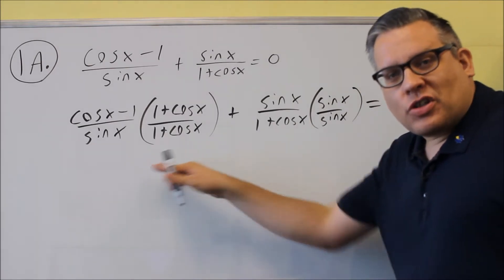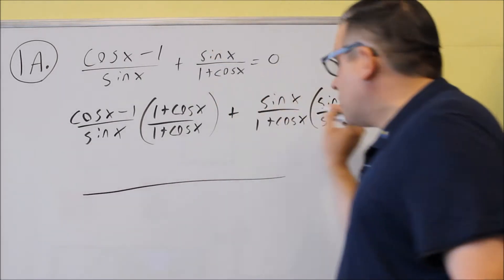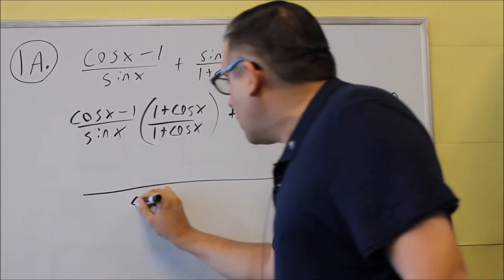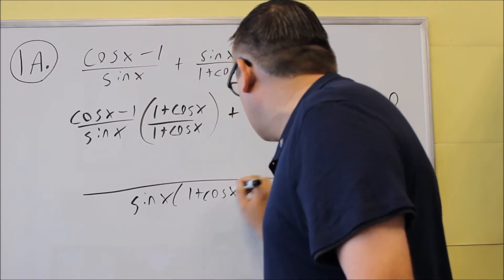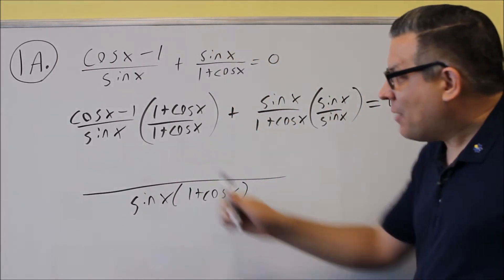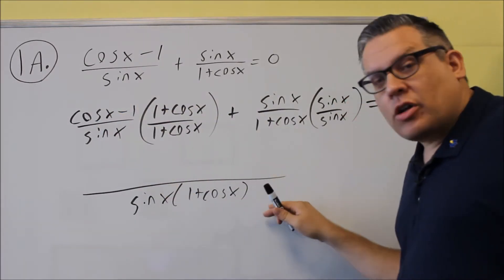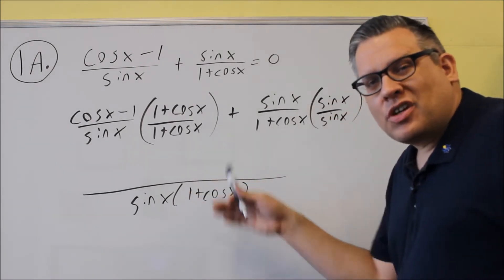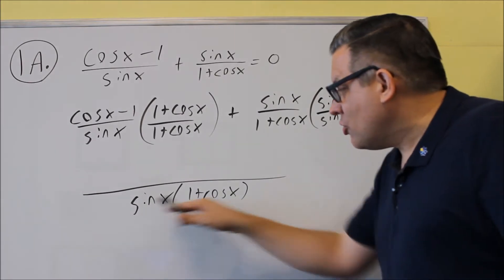Next thing we want to do is put this together for a single denominator. Now that we've set up the multiplication, we're going to have sine x and then 1 plus cosine x on the bottom. On the top, we're going to multiply this through. Now the bottom, I don't want to multiply that through because a lot of times when you have something on the bottom, it's going to cancel and you'll be able to cancel something out in a later step.